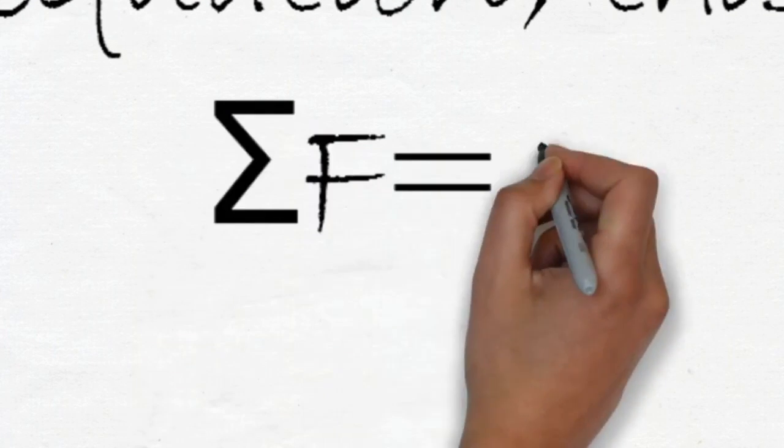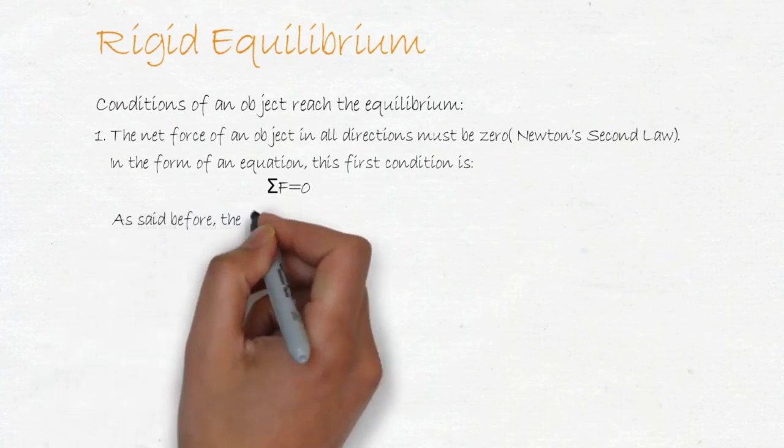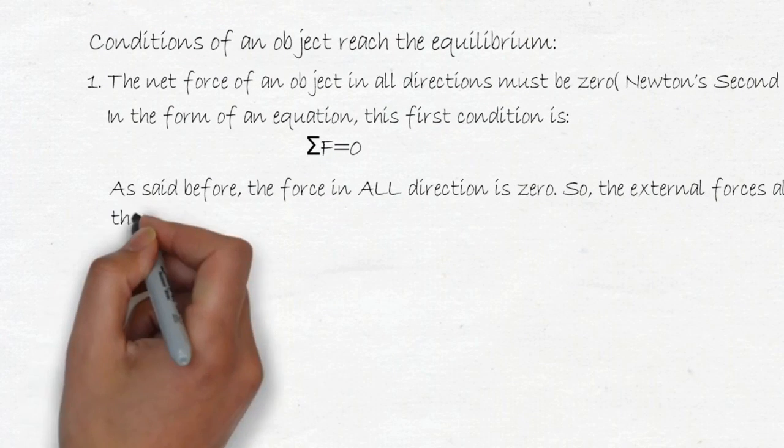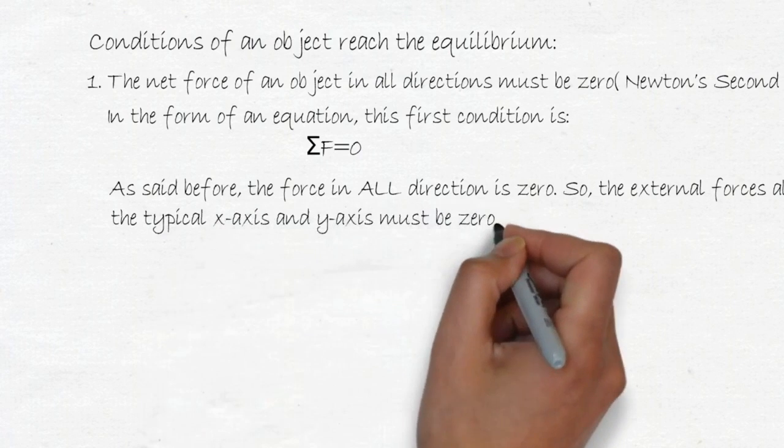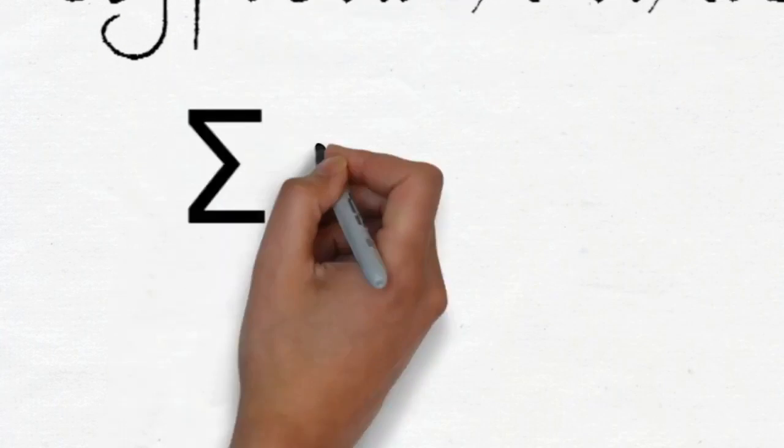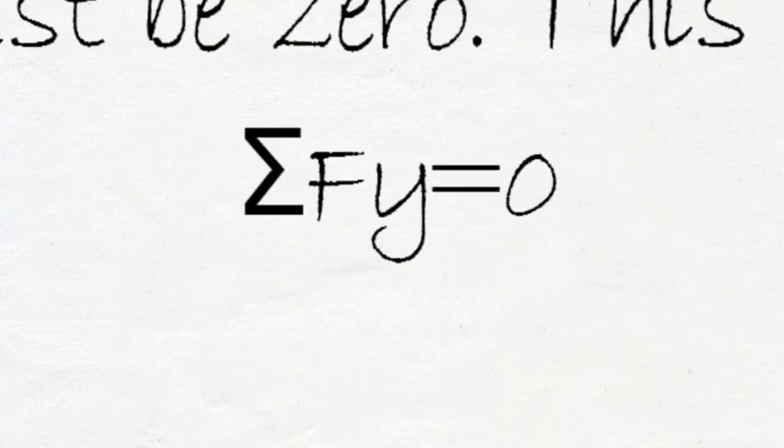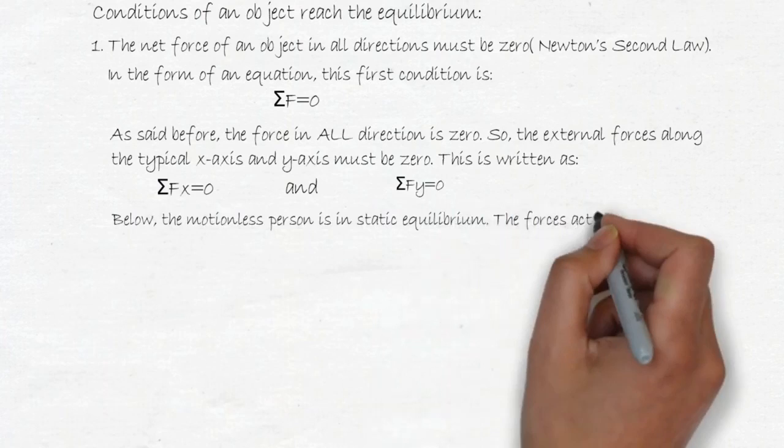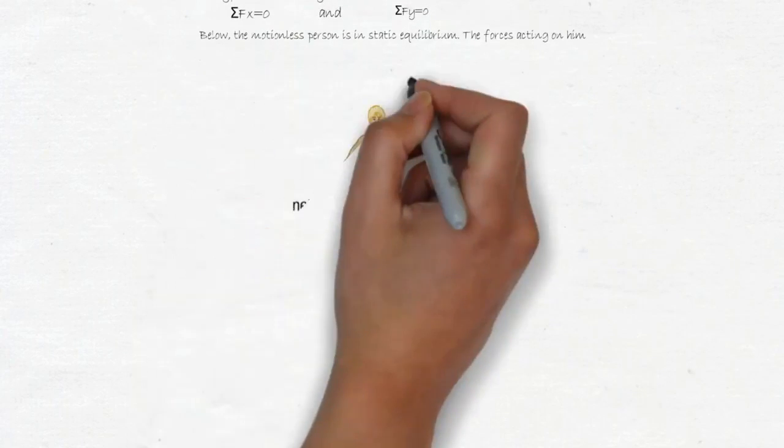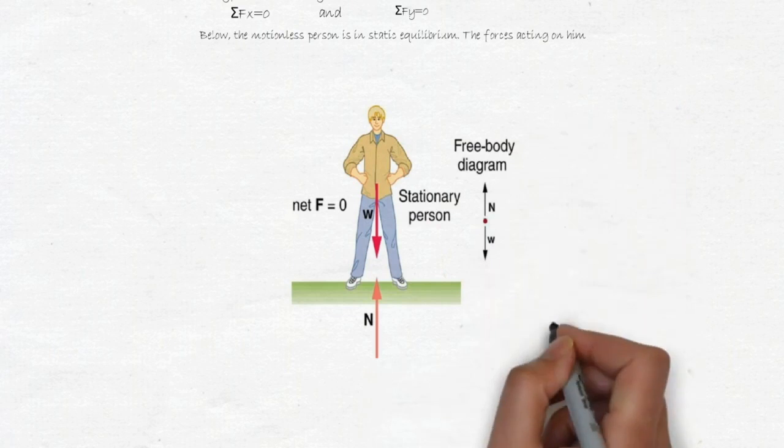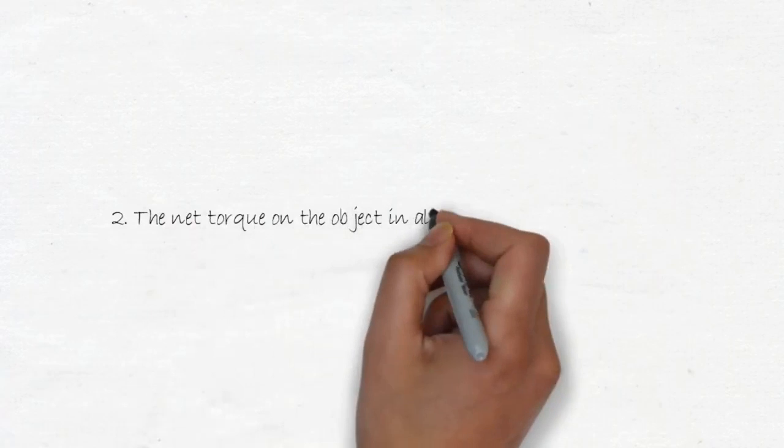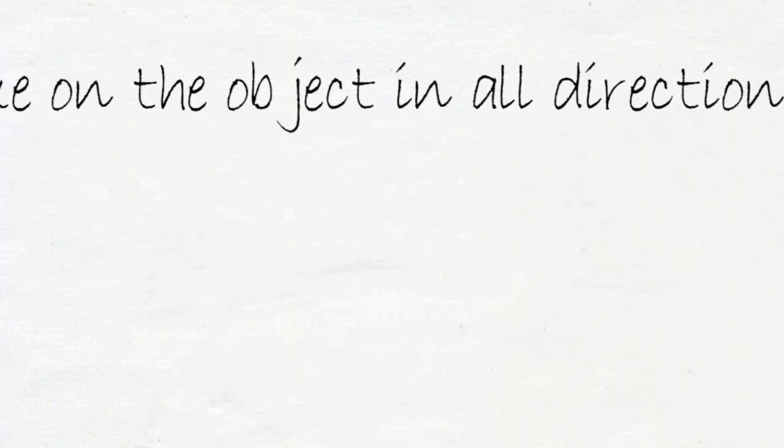this first condition is written like this. As I said before, the force in all directions is zero. So the external forces along the typical x-axis and y-axis must be zero. This is written as right there. Here's an example of the equilibrium itself. As we can see, we stand on the ground. The second condition is the net torque in the object in all directions must be zero. And it can be written as like this.